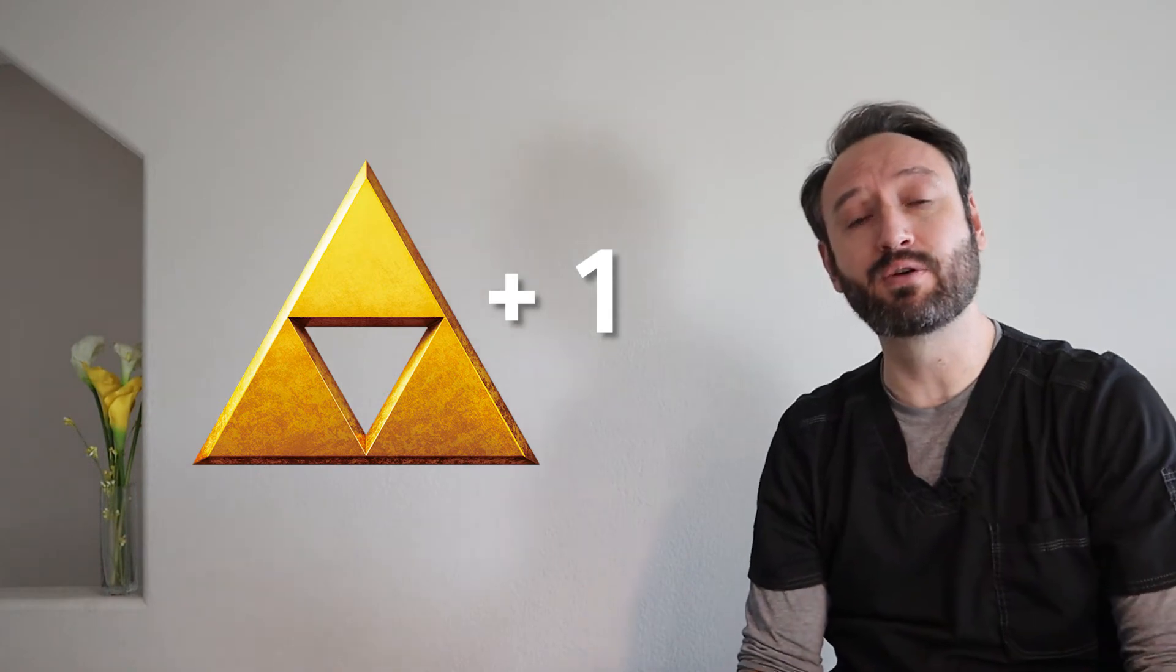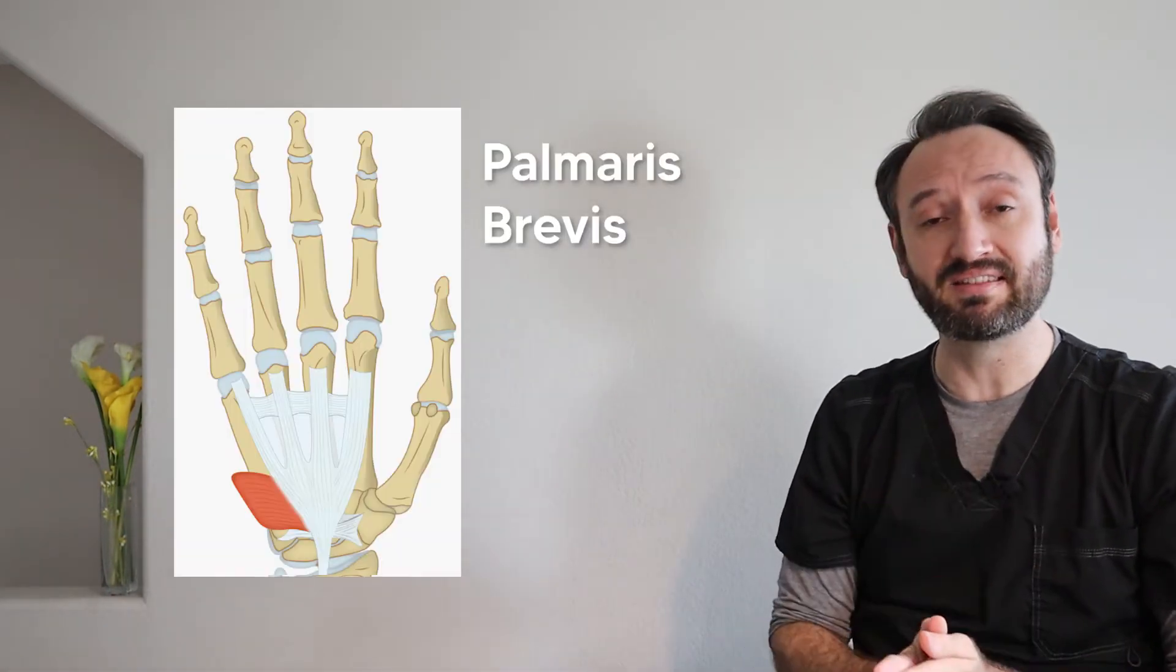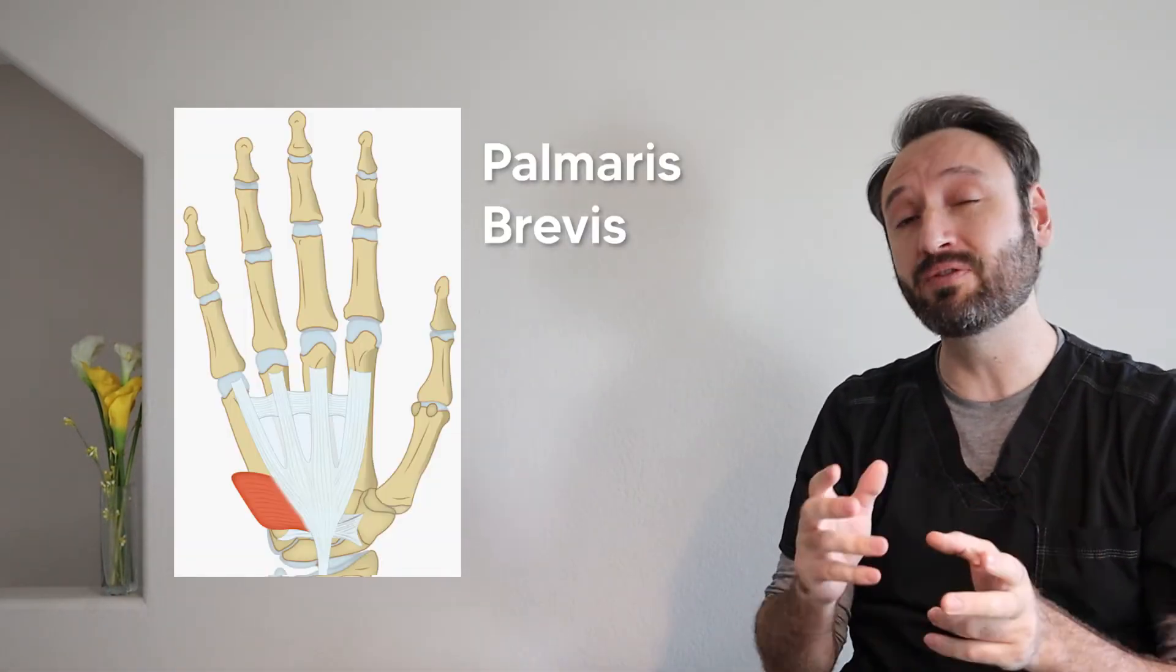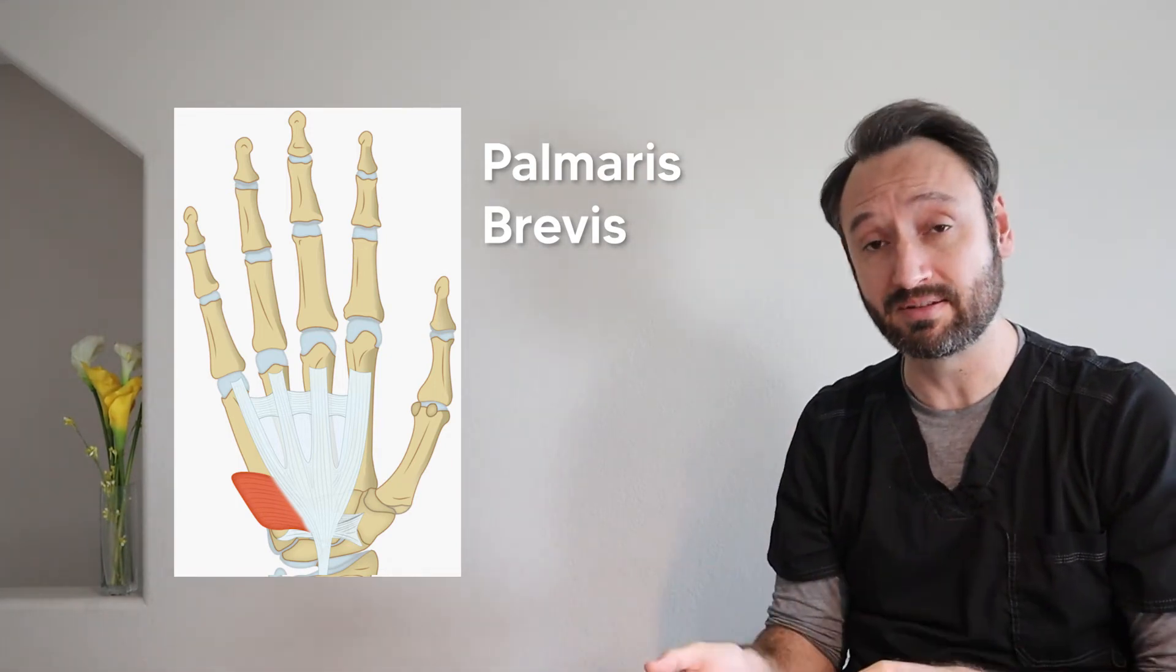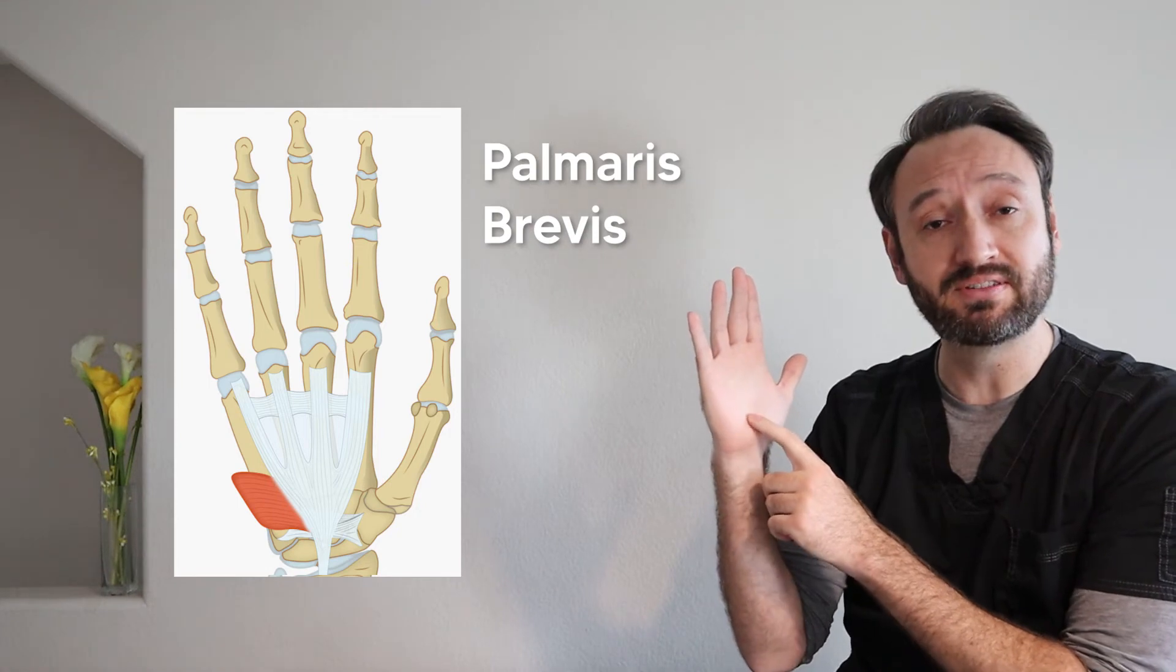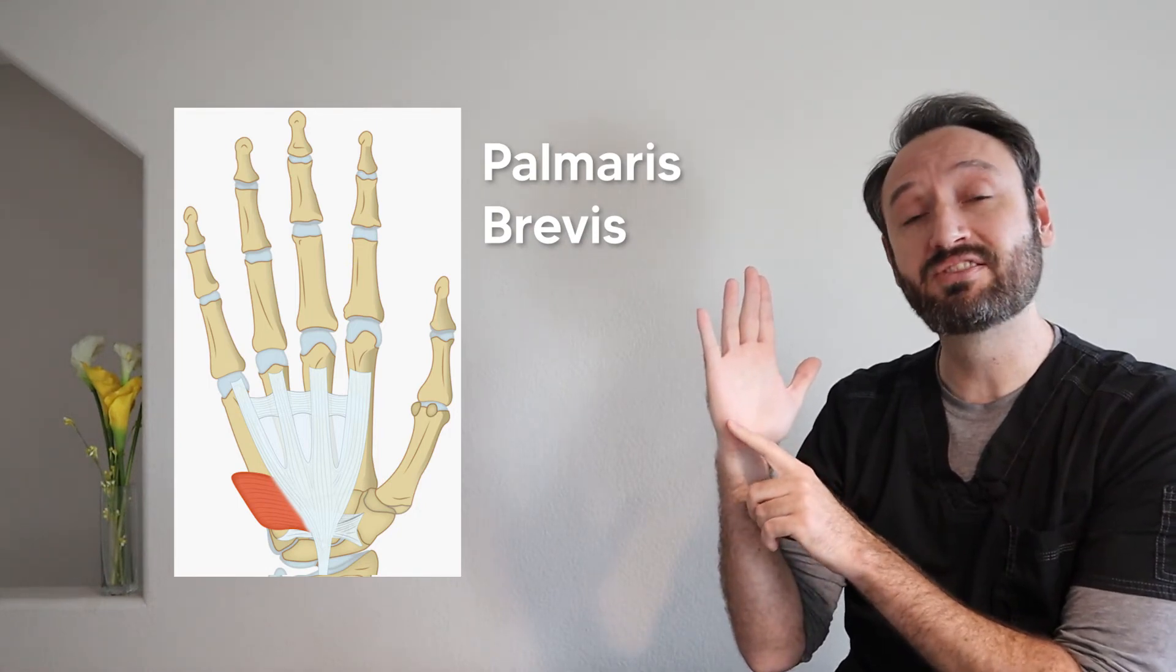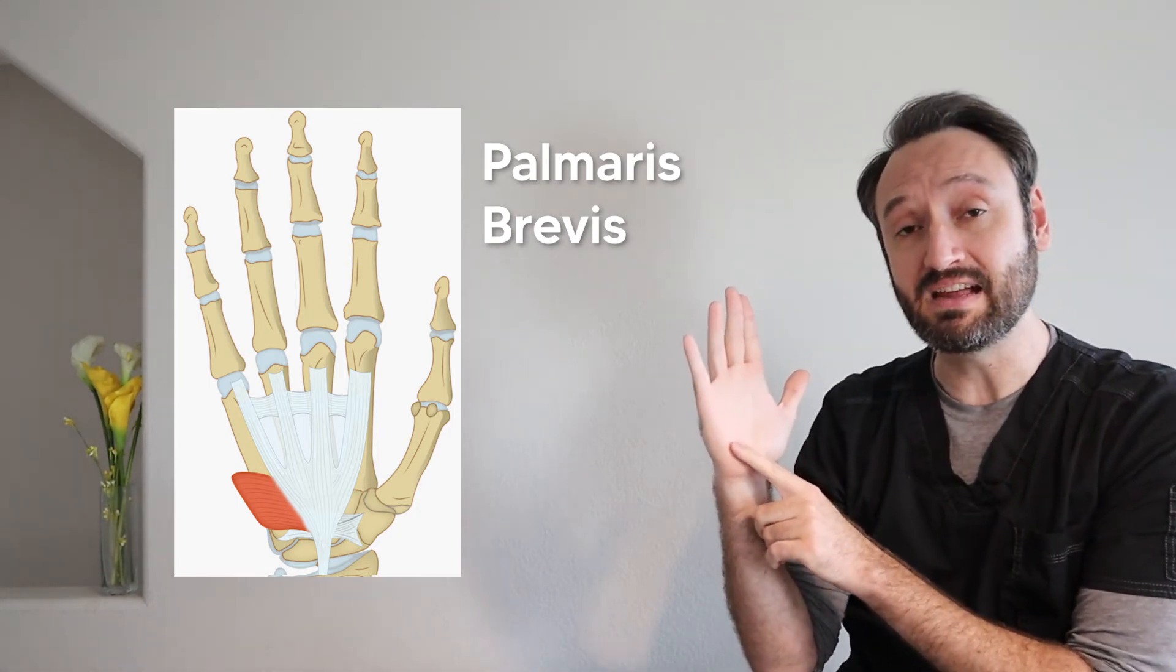So that covers our entire triforce. We saved Hyrule, we defeated Ganon, we're doing great, but we have to remember our triforce plus one. So the plus one there of course is the palmaris brevis. This is a very small, very superficial muscle that doesn't technically fit into any of our other compartments. So it originates off the palmar aponeurosis of the palm and then inserts very superficially into the skin.